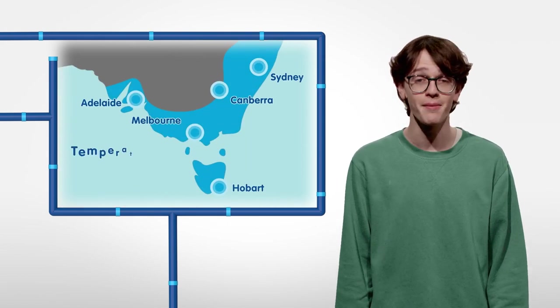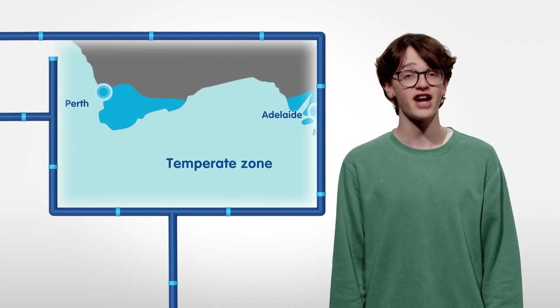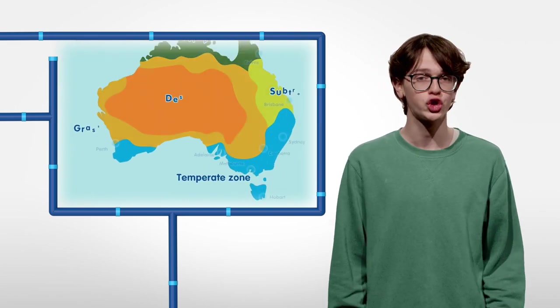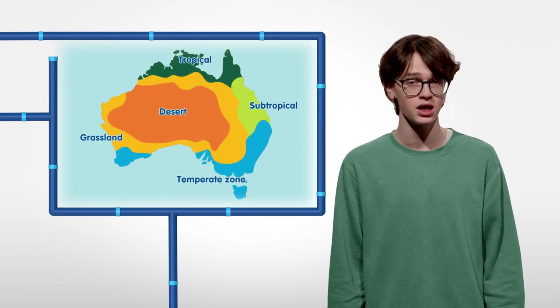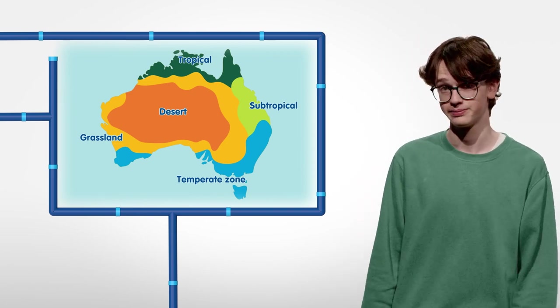The temperate zone — places like Melbourne and Hobart. They have distinct seasons: cold short days in winter and long hot days in summer. So where do you live, and how does the climate affect your weather?